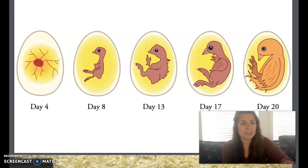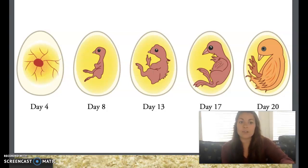How does oxygen pass through the shell of the egg? If you look at an eggshell under a magnifying glass, you will see it has tiny holes called pores that allow oxygen in and carbon dioxide out.